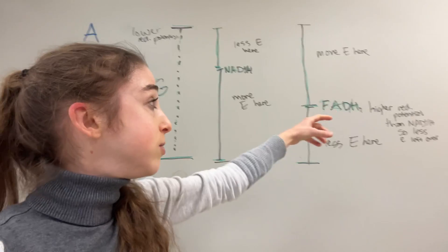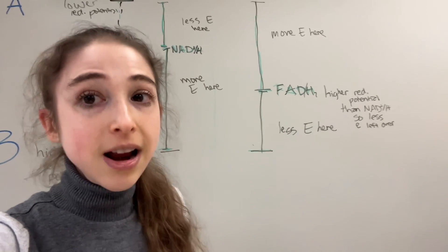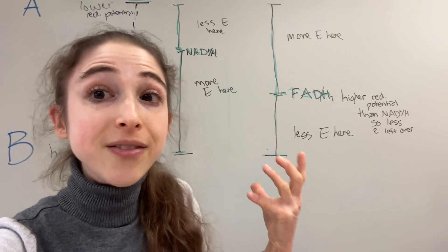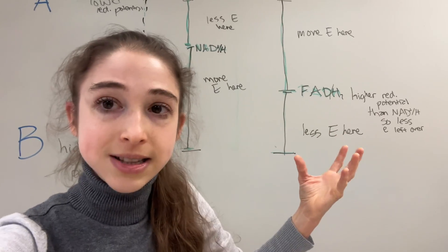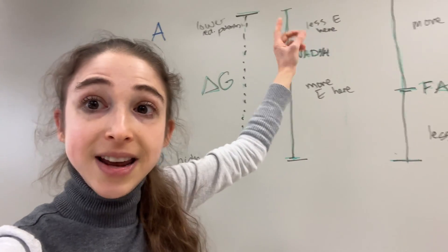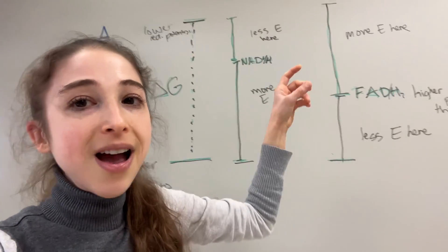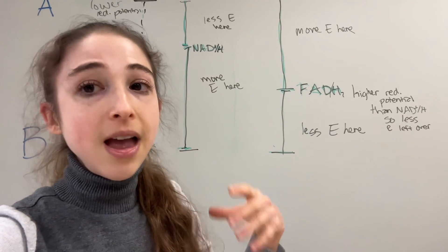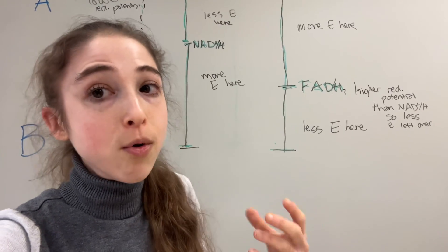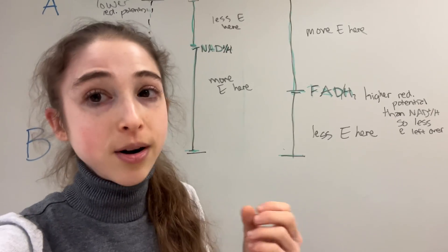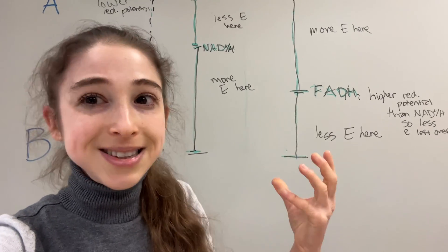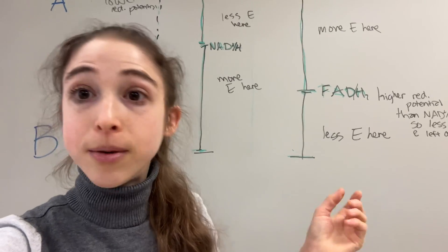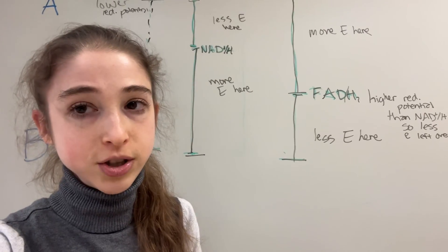If we use FAD, we have less energy left over. This is why in Complex II of the electron transport chain, we don't have enough energy to pump protons. We pump protons if we go directly from NADH to Q, but not if we go from FADH2 to Q. Ultimately, this is why we get more ATP made per NADH than per FADH2 — but they both do the same thing: pass electrons to Q, from where they continue through the rest of the electron transport chain.